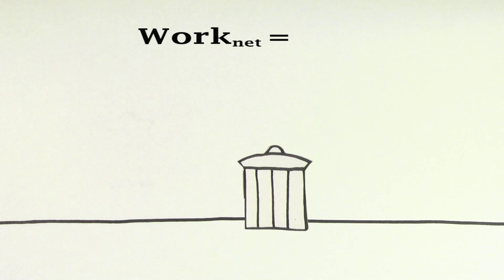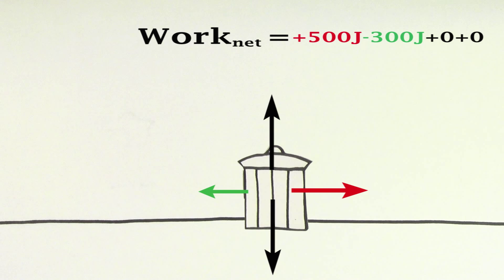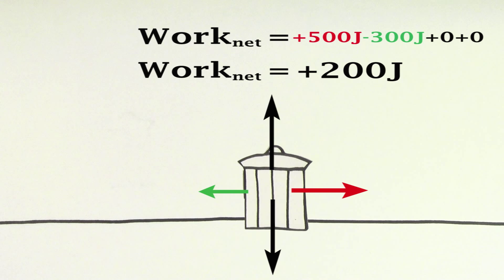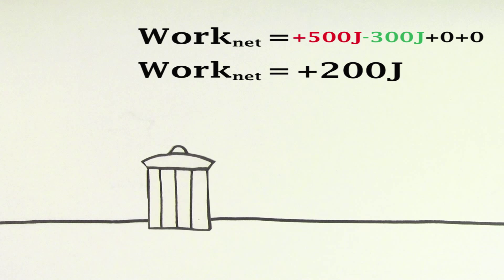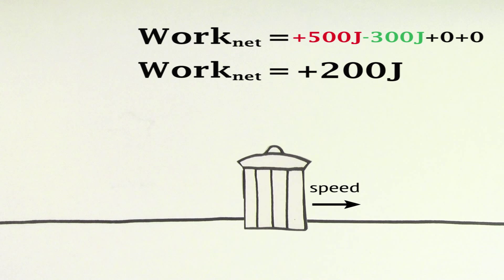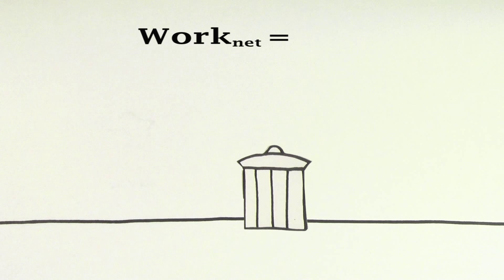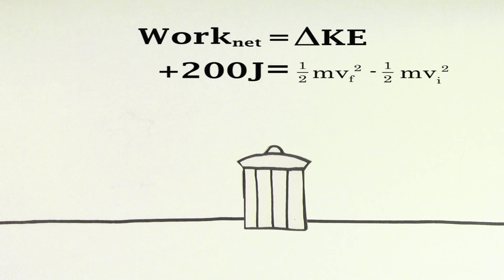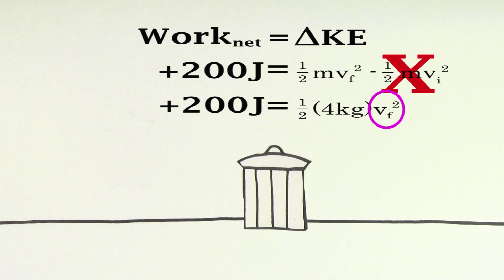If we wanted to know the net work done on this trash can, we could just add up the work done by each individual force. So the net work is going to be 200 joules. Now that we know the net work done on the trash can, we can use the work-energy principle to figure out the speed of the trash can after it slid the 10 meters. The work-energy principle says that the net work done on an object is equal to the change in kinetic energy of that object. So 200 joules equals the change in kinetic energy. If we assume the trash can started at rest, the initial velocity is zero, and we can solve for the final speed of the trash can, which comes out to be 10 meters per second.